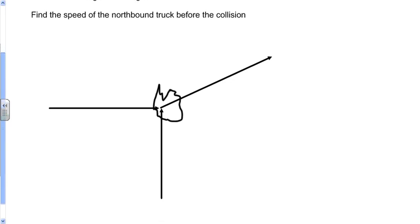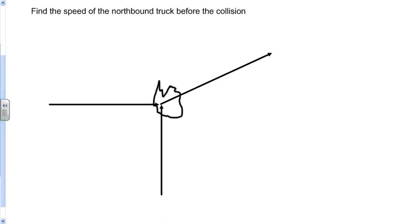I have these vector arrows. The one right here represents the car, and the vector arrow going north represents the truck. We can make a quick axis. I'll call north the y-axis and east the x-axis. I'm also going to label the angle 40 degrees.